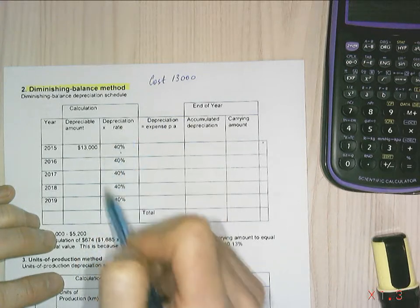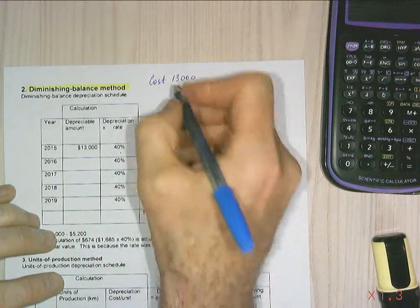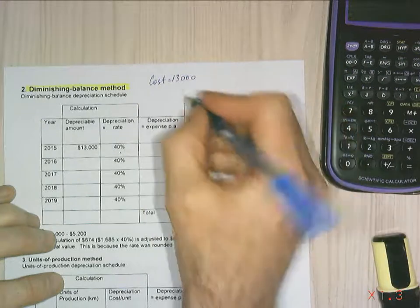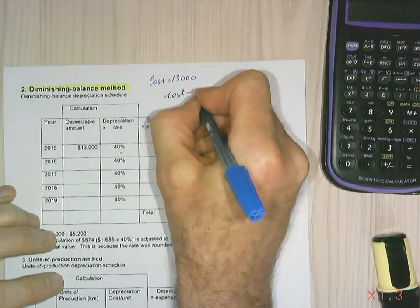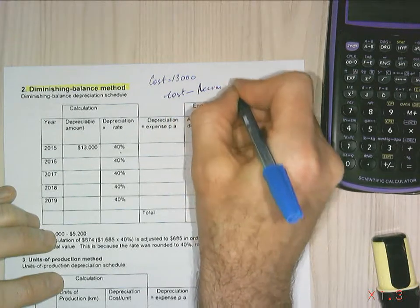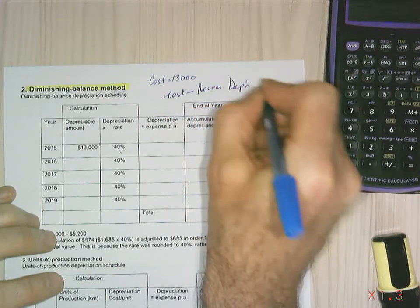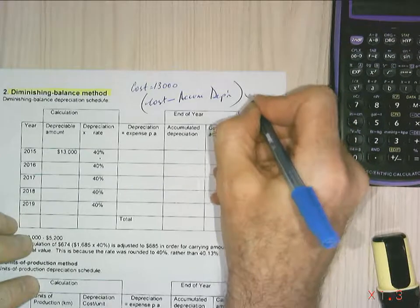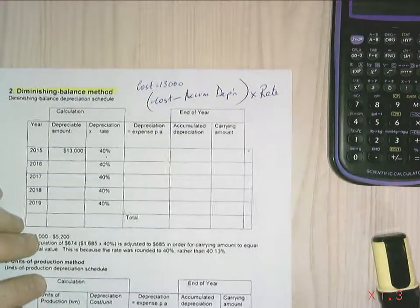Now the formula would be my cost minus my accumulated depreciation, I'll abbreviate that, times my rate. This is how I calculate my depreciation now.